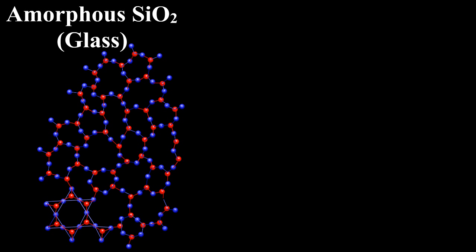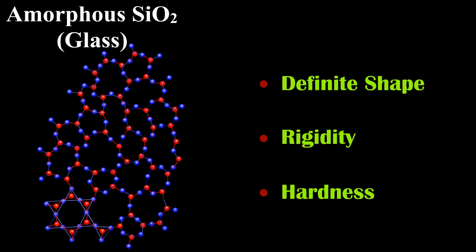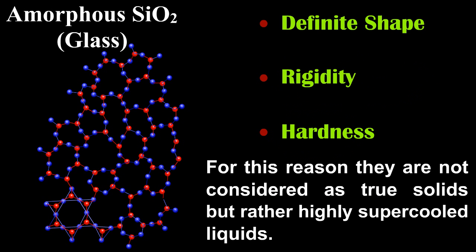Amorphous solids like glass, rubber, etc., although possessing many characteristics of crystalline solids such as definite shape, rigidity, and hardness, are devoid of a regular internal structure and melt gradually over a range of temperature. For this reason, they are not considered as true solids but rather highly supercooled liquids.